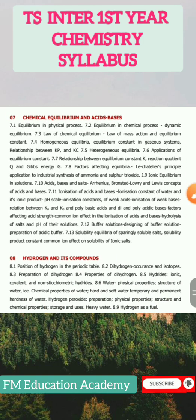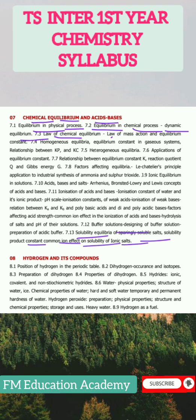The seventh chapter is Chemical Equilibrium and Acids and Bases. Topics include Equilibrium in Physical Process, Equilibrium in Chemical Process, Dynamic Equilibrium, Law of Chemical Equilibrium, through to Solubility Equilibria of Sparingly Soluble Salts, Solubility Product Constant, and Common Ion Effect on Solubility of Ionic Salts.